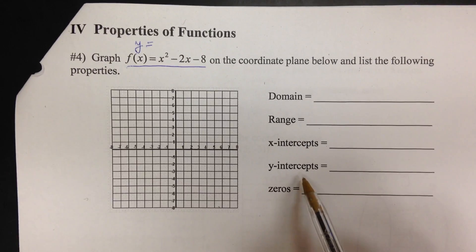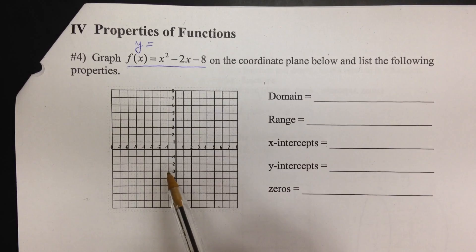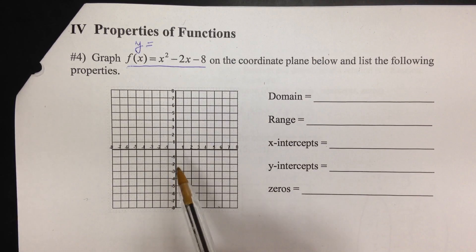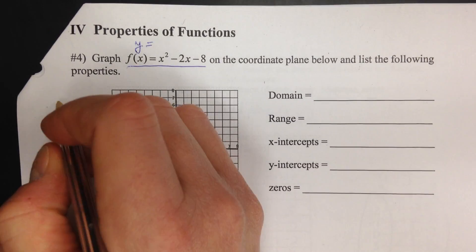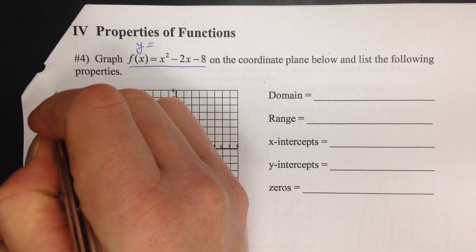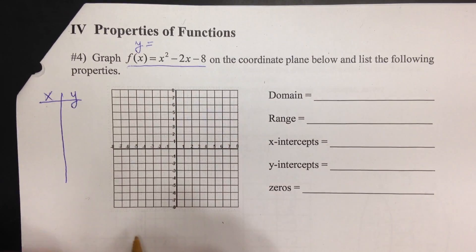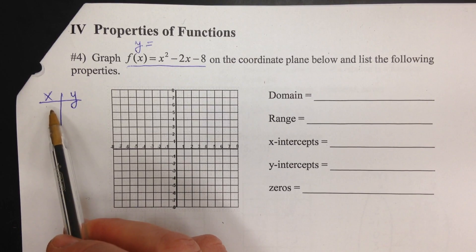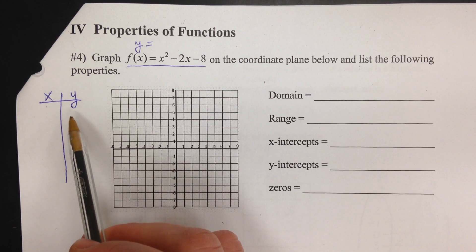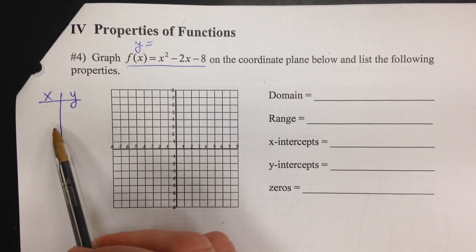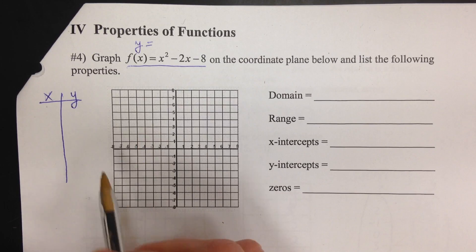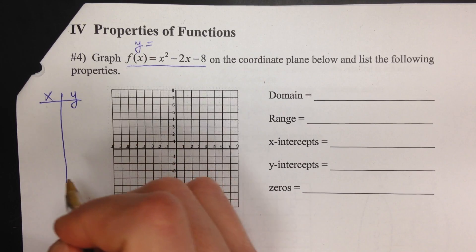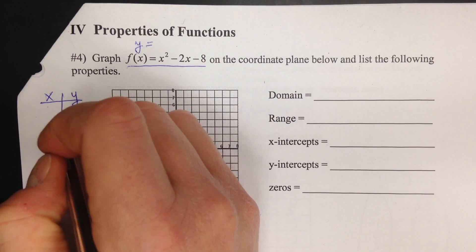There are a couple ways to graph this. Probably the easiest is with the calculator, but if we don't have that, we can pick a set of points and make a table of x's and y's. When you plug in an x value into a function you always get a y value, so we want to plug in some points and figure out what the shape of this curve is going to be.